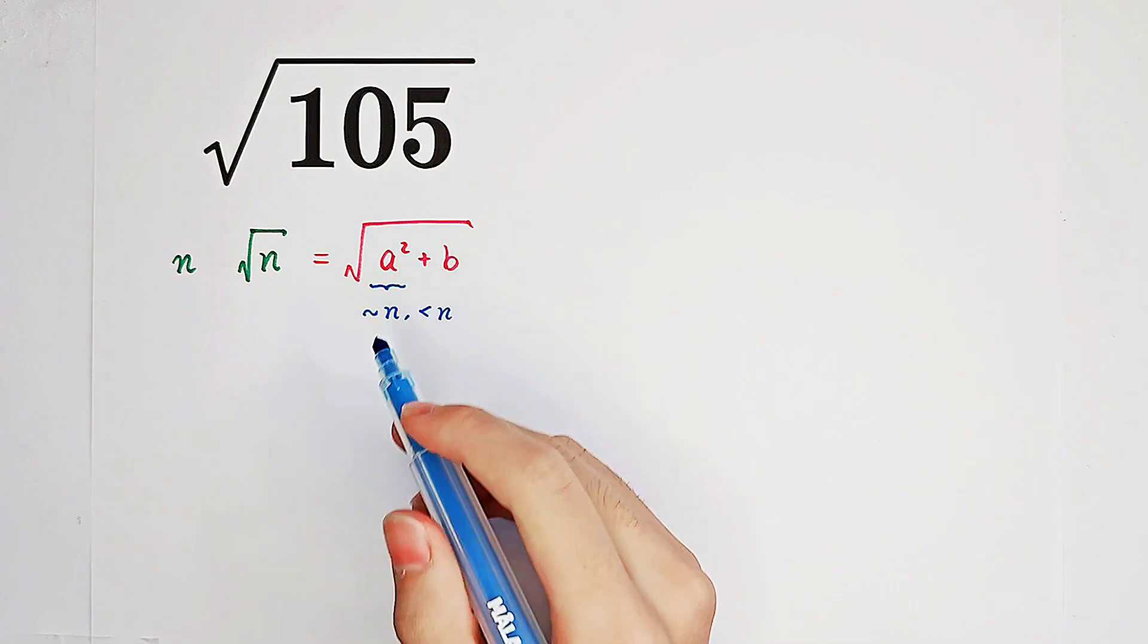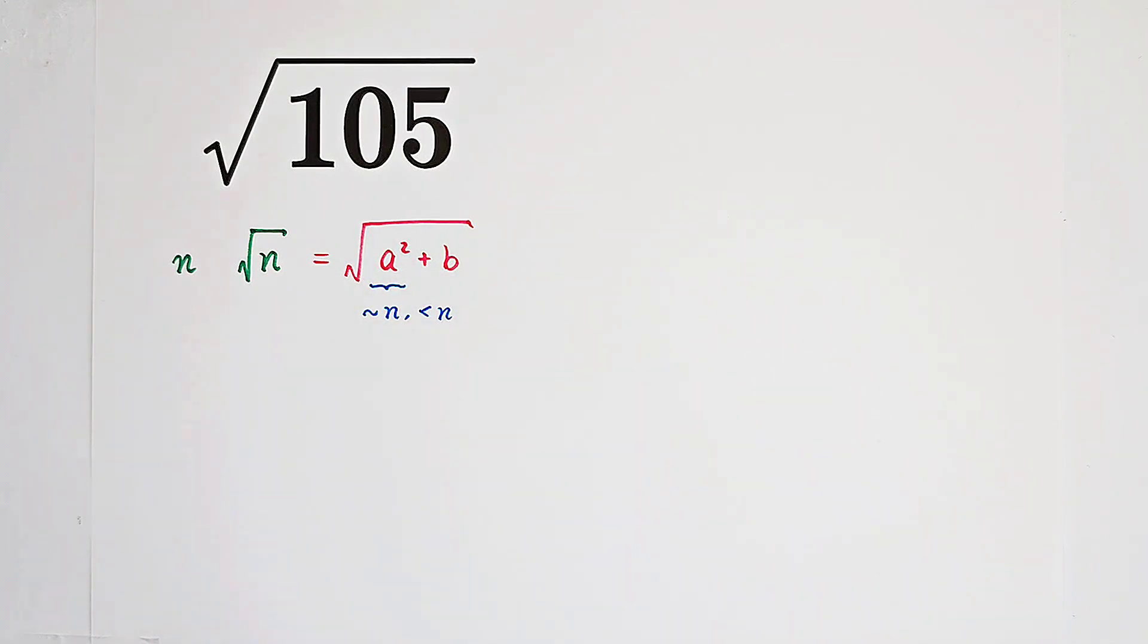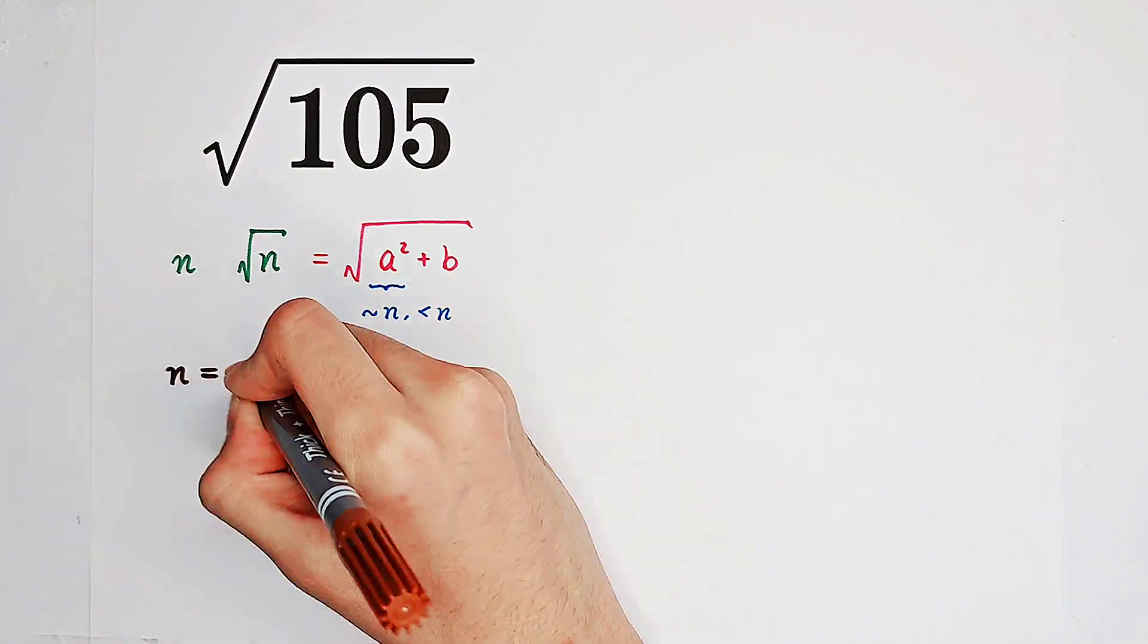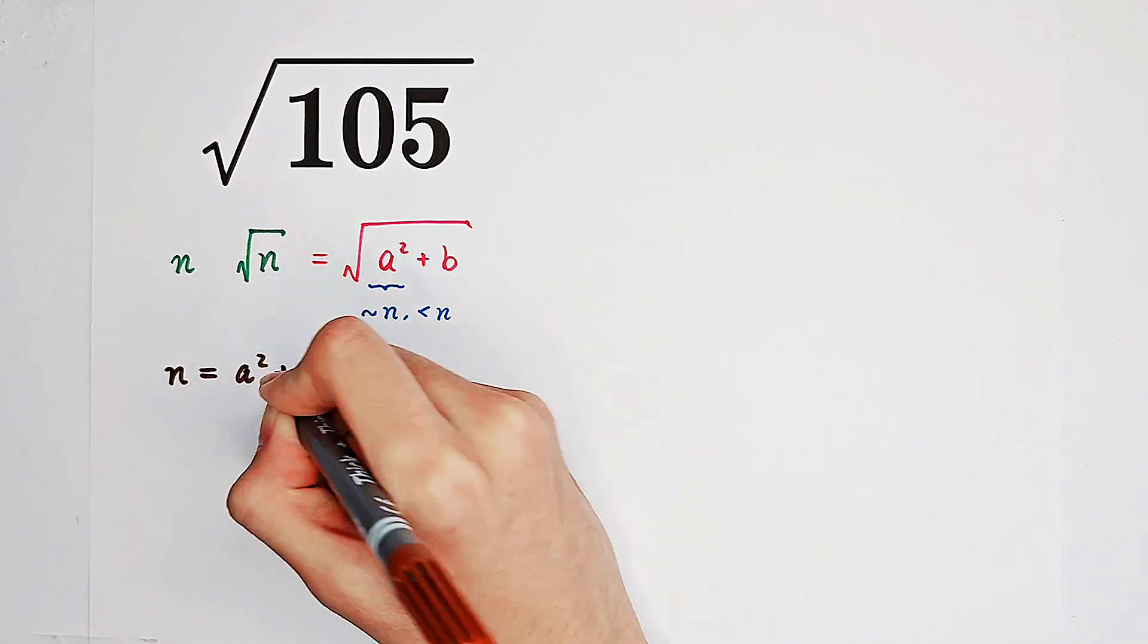So b is just n minus a squared. That's easy. And now what we're gonna do is we can square both sides. Since a squared plus b is just n and n is a natural number, so we can square both sides, and we get n equals a squared plus b.